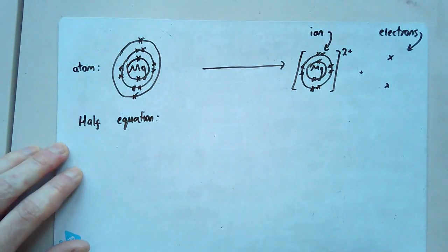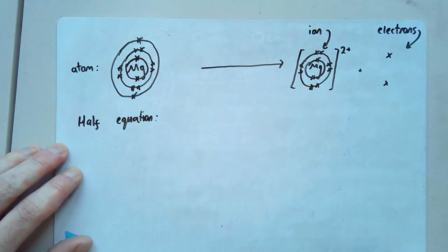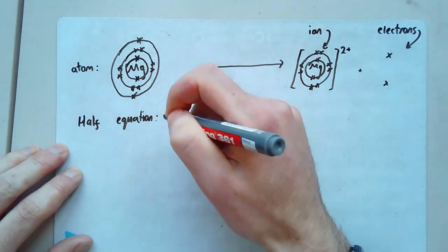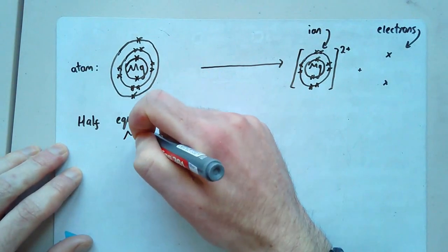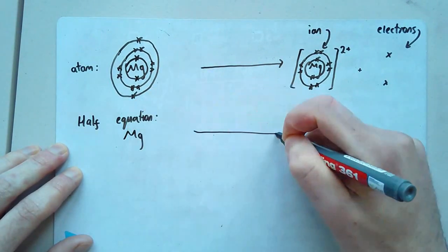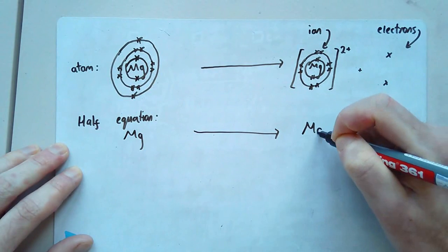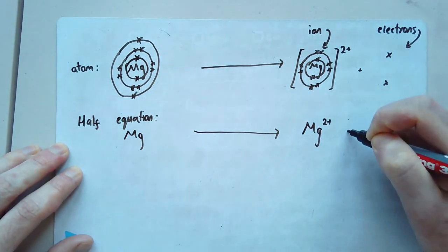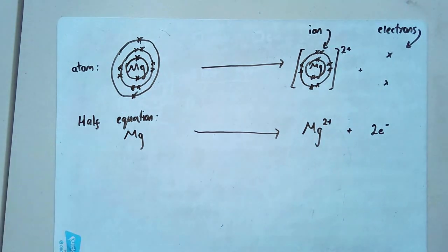What I'd like you to do now is write for me a half equation for that process. Pause the video. So your half equation here will be Mg forming Mg 2+ add 2 E-. And there you have just constructed a half equation for yourself.